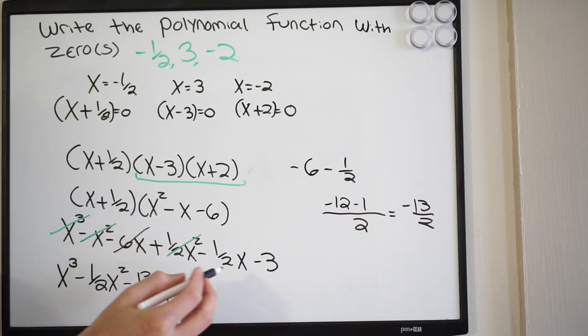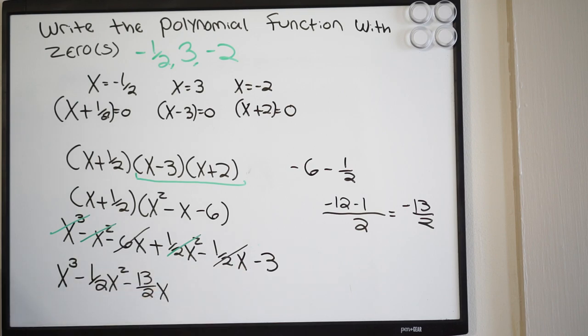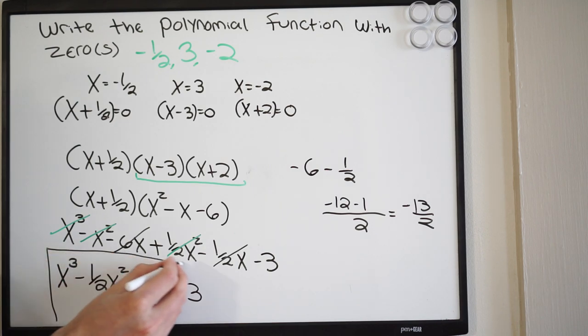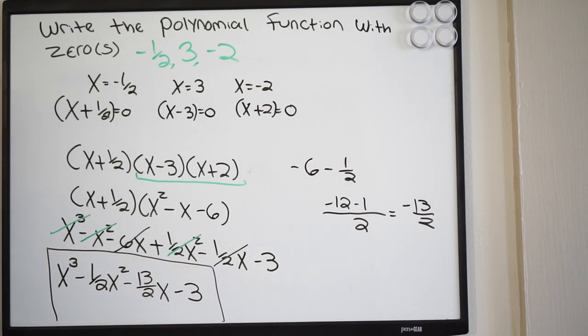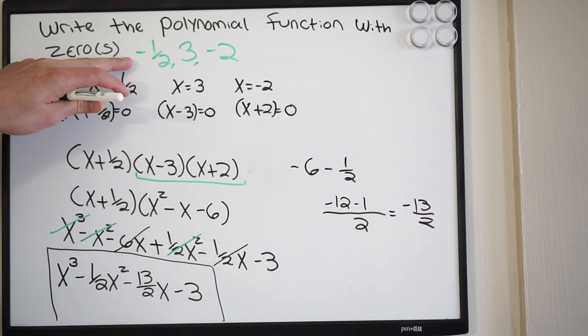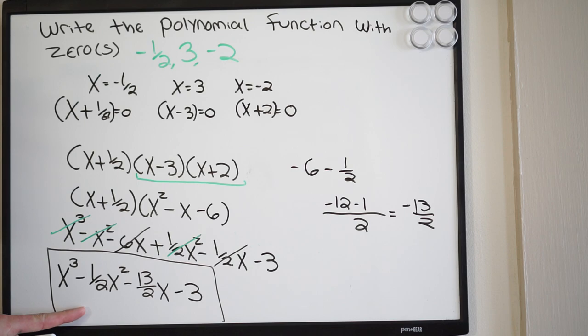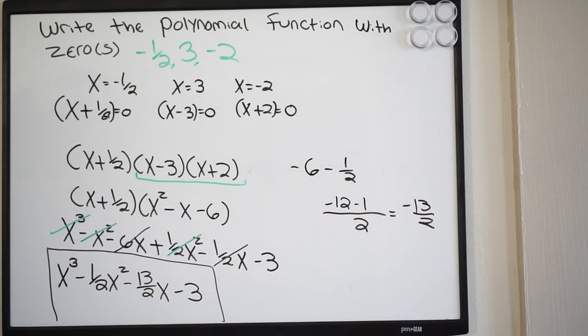And now we just write our constant term, negative 3. And this is complete. So that is the polynomial function with the zeros negative a half, 3, and negative 2. That is what it looks like when it is expanded out.